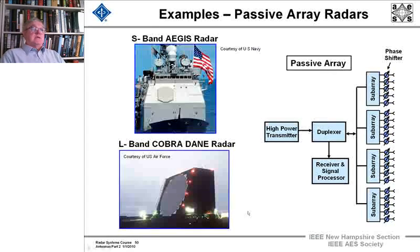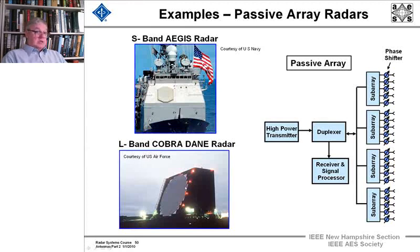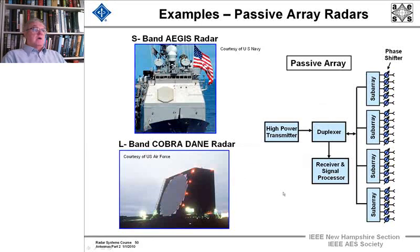Here are some examples of passive arrays. The Aegis array has thousands of elements with phase shifters, and behind it is a feed structure connecting to one set of transmitters for each of the four faces on the cruiser. Cobra Dane is another example of a passive array — it has each of those elements, but behind it there's a feed structure going to an L-band large power transmitter, which drives this passive array structure.